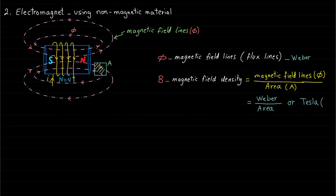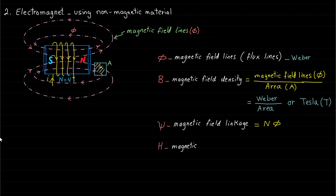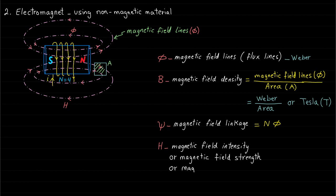The magnetic field can also be represented by a third variable called psi, which represents the magnetic field lines linked to the number of turns of the coil, and it is equal to N times phi. This is called magnetic field linkage. The fourth variable is the magnetic field intensity, denoted by the letter H. The magnetic field intensity is directly related to the exciting current and magnetic field loop length, and can also be called magnetic field strength or magnetic field excitation. Its unit is ampere-turns per meter.